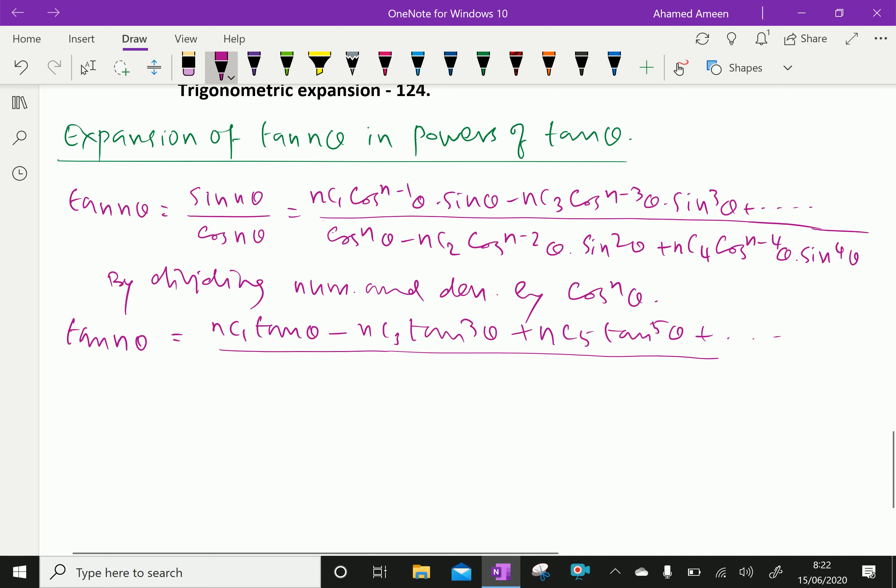In the denominator, the first term has cos power n theta. If we divide by the same cos power n theta, it becomes 1 minus Nc2 tan square theta plus Nc4 tan power 4 theta, with powers increasing. Now we have this result.